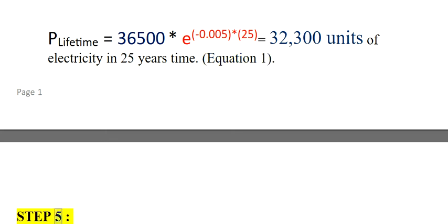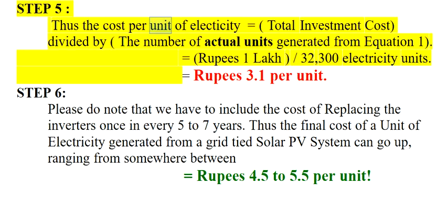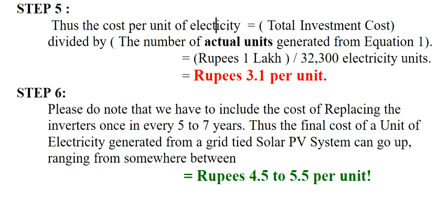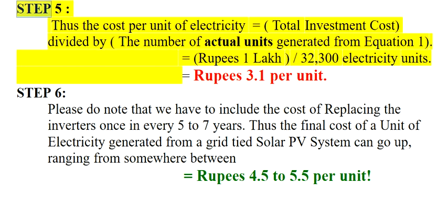Step 5: Thus, the cost per unit of electricity equals the total investment cost divided by the number of actual units generated from Equation 1.